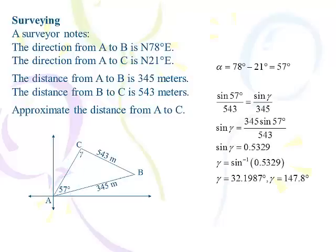So, the sine of 57 degrees over 543 is the sine of gamma over 345. Cross multiply, divide. Take inverse sine. Now, you get two angles. Remember, I told you this before. That when you do inverse sine, you always get two angles. The one your calculator tells you and the obtuse one. So, 32.2 is what your calculator tells you. But right away, subtract that from 180. 147.8 also has a sine of 0.5329.